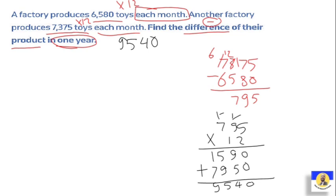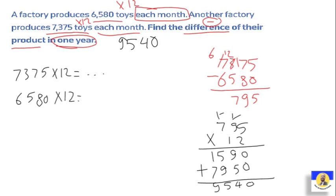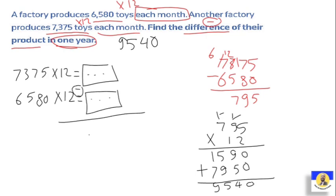That's the difference. Another method: multiply 7,375 by 12 first, then multiply 6,580 by 12 separately, and finally subtract the two results — you'll get the same answer of 9,540. The key is understanding the question. It doesn't matter which method you use.